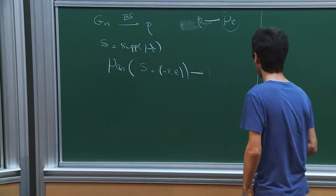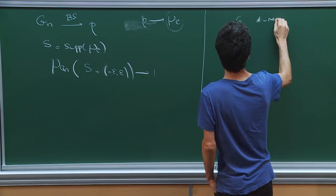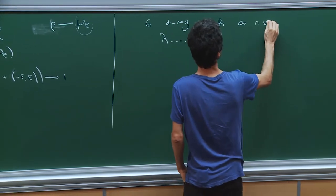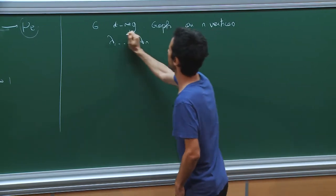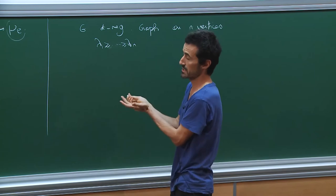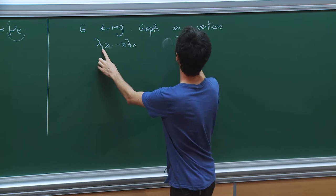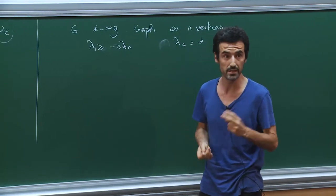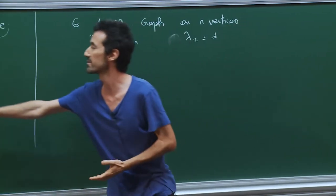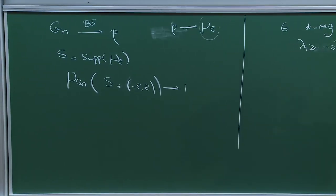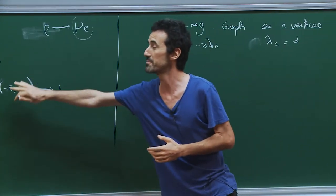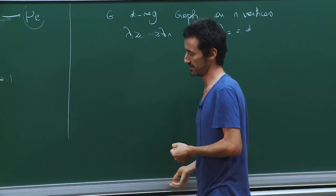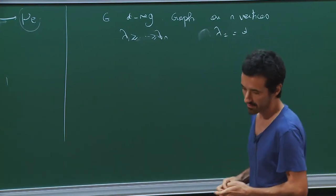Let me give a down-to-earth example. If G is a d-regular graph on n vertices, you order the eigenvalues of the adjacency matrix. The adjacency matrix has non-negative entries, so the first eigenvalue is d — this is a Perron eigenvector. But if the second eigenvalue is also equal to d, it means there are two connected components. And if lambda-n is minus d, it says the graph is bipartite, and so on. So outliers — eigenvalues typically outside this set — are made possible thanks to global geometric properties of the graph.